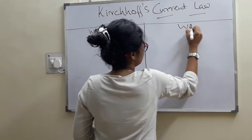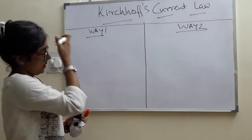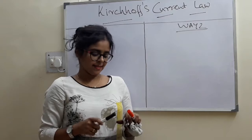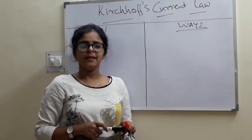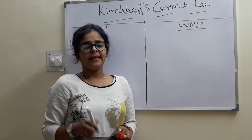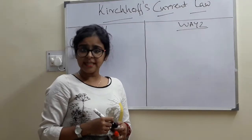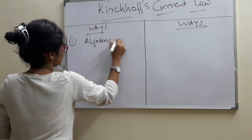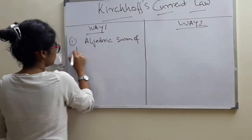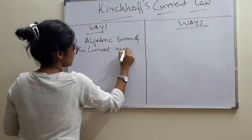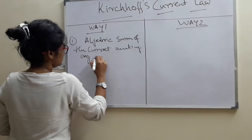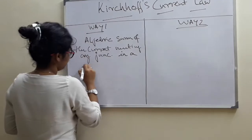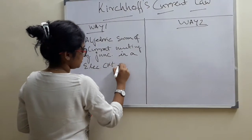This is Way 1. This is Way 2. What is Kirchhoff's current law? The algebraic sum of the currents meeting at any junction of an electrical circuit is 0.